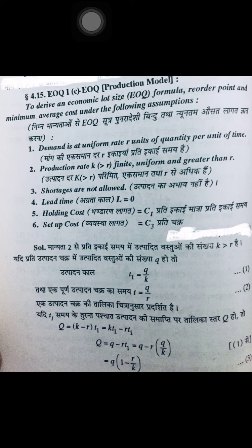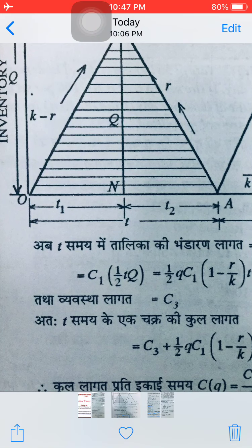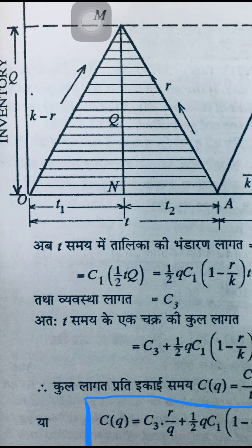In this model the main diagram we need to understand first — then we go to the derivation. Total inventory capital Q is available, becoming available gradually while selling is also going on simultaneously. From instantaneous production, since K is greater than R, your production net is K minus R. At point M your production ends and capital Q total becomes available; K minus R keeps getting deducted during production.